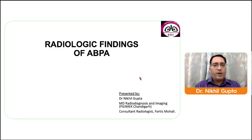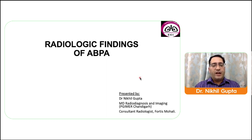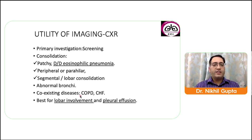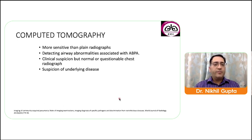Dr. Nikhil Gupta, consultant radiologist at Fortis Mohali, now discusses radiological findings of ABPA. The chest X-ray is the primary investigation for screening, used to look for consolidation — which may be patchy, peripheral, perihilar, segmental, or lobar — and to look for abnormal bronchi or coexisting diseases such as COPD or chronic heart failure. CT is more sensitive than plain radiograph and better for detecting airway abnormalities, and is used when clinical suspicion is high but chest radiograph is normal or questionable.